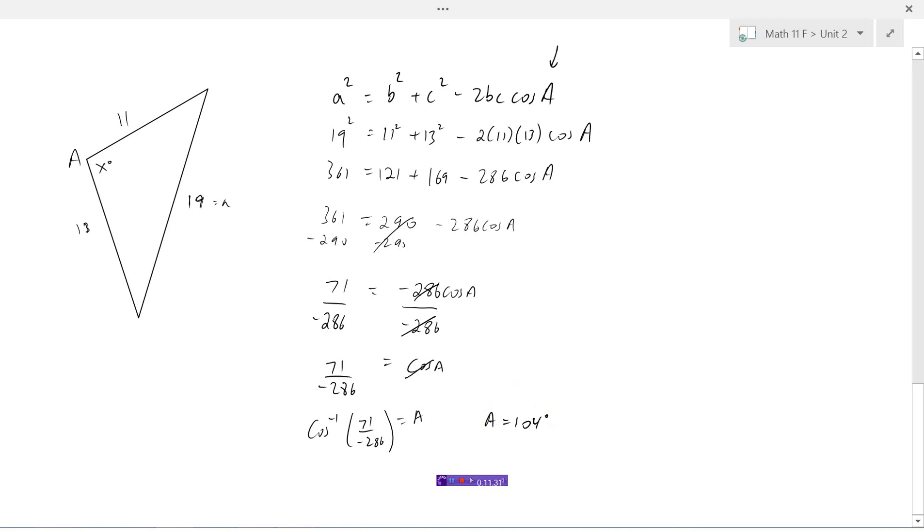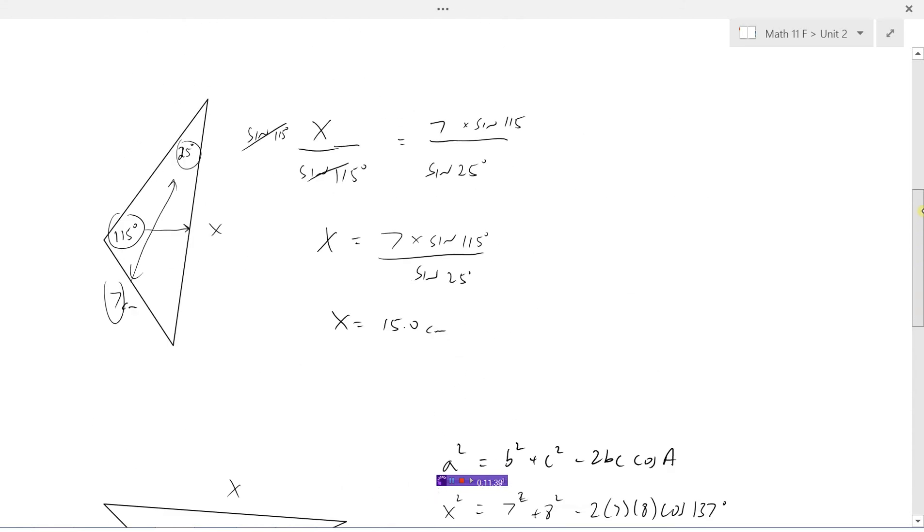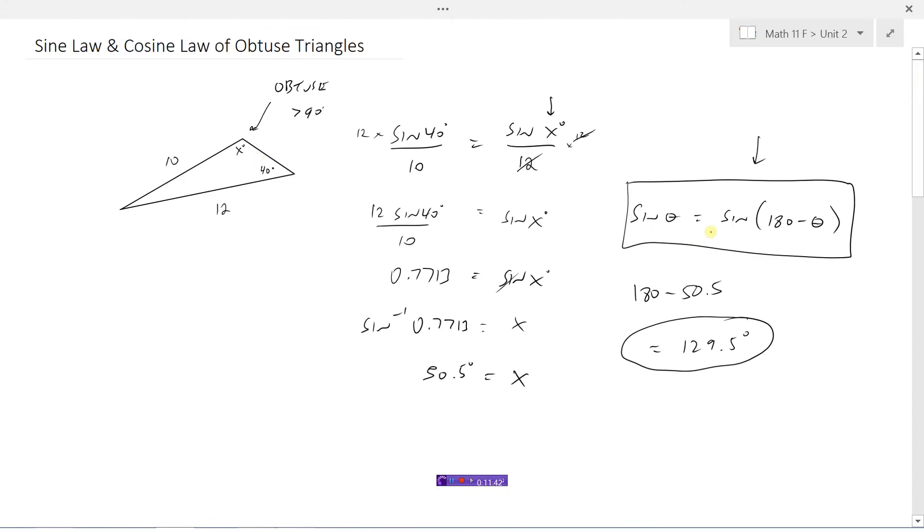The only time, whenever using sine law and cosine law with obtuse triangles, that you have to worry about anything, is when you're using the sine law to find an angle. That's the only time you're going to have to worry about making sure you go 180 minus the angle that you're given if you're finding an angle that is obtuse. Otherwise the sine and cosine law works exactly the same way with obtuse triangles as it does with the acute triangles.